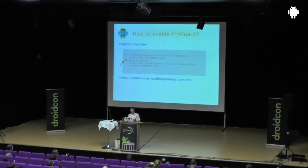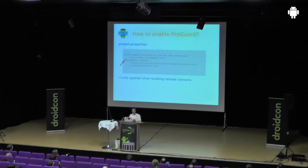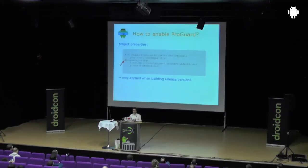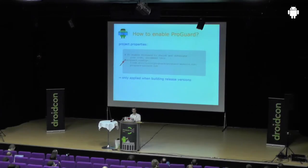Hopefully I've convinced you that ProGuard can be useful. You can easily give it a try just by commenting in a single line in the project.properties file — it's the ProGuard config line, and there's a hash mark that you have to remove. If you build release versions of your application, ProGuard will automatically be applied. It doesn't get applied to debug builds in Eclipse or Ant, but in exports in Eclipse and release builds in Ant it does get applied. This is getting more flexible in the upcoming Gradle build as well.